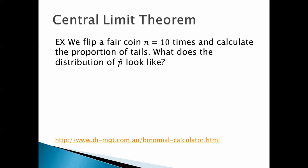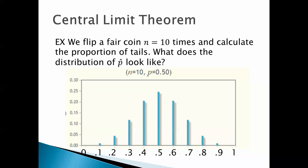We flip a fair coin n equals 10 times and calculate the proportion of tails. What does the distribution of p-hat look like? Here's what it looks like. Because when you flip a fair coin — a coin with a 50-50 chance of coming up tails — a good portion of the time you'll get 5 out of 10 tails. In other words, the proportion of successes will be 0.5. But even when the coin is fair, sometimes you'll have 40% successes or 60% successes, sometimes 30% or 70%, in other words 3 out of 10 or 7 out of 10.